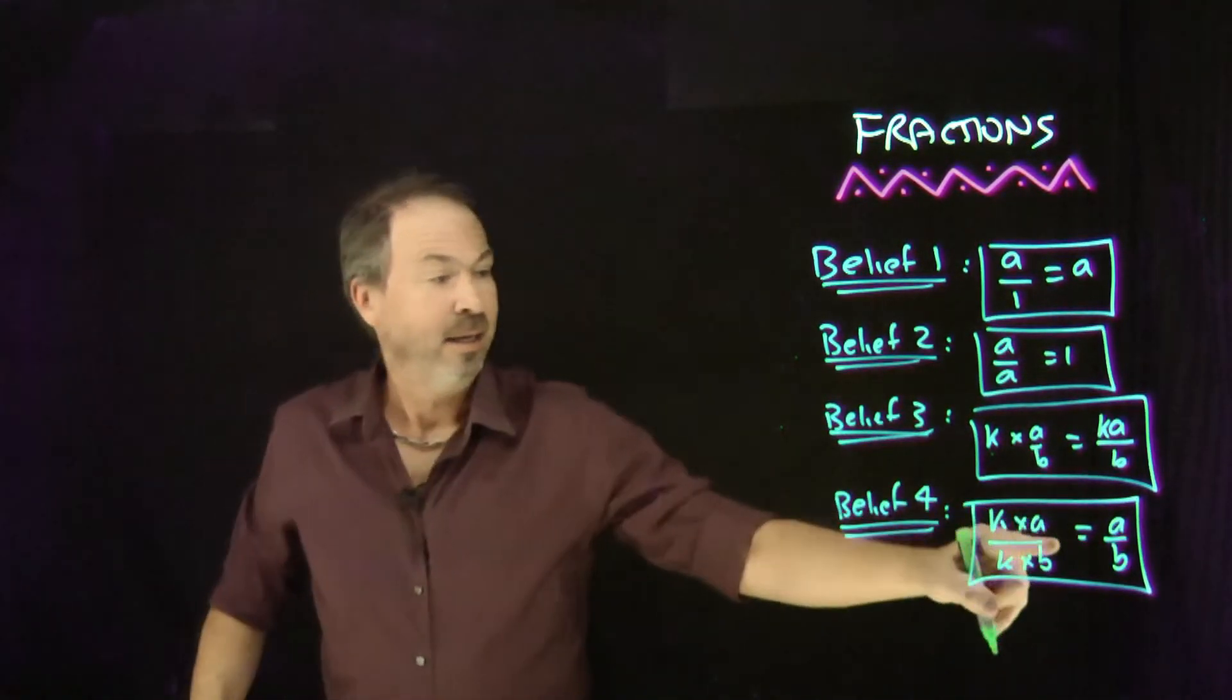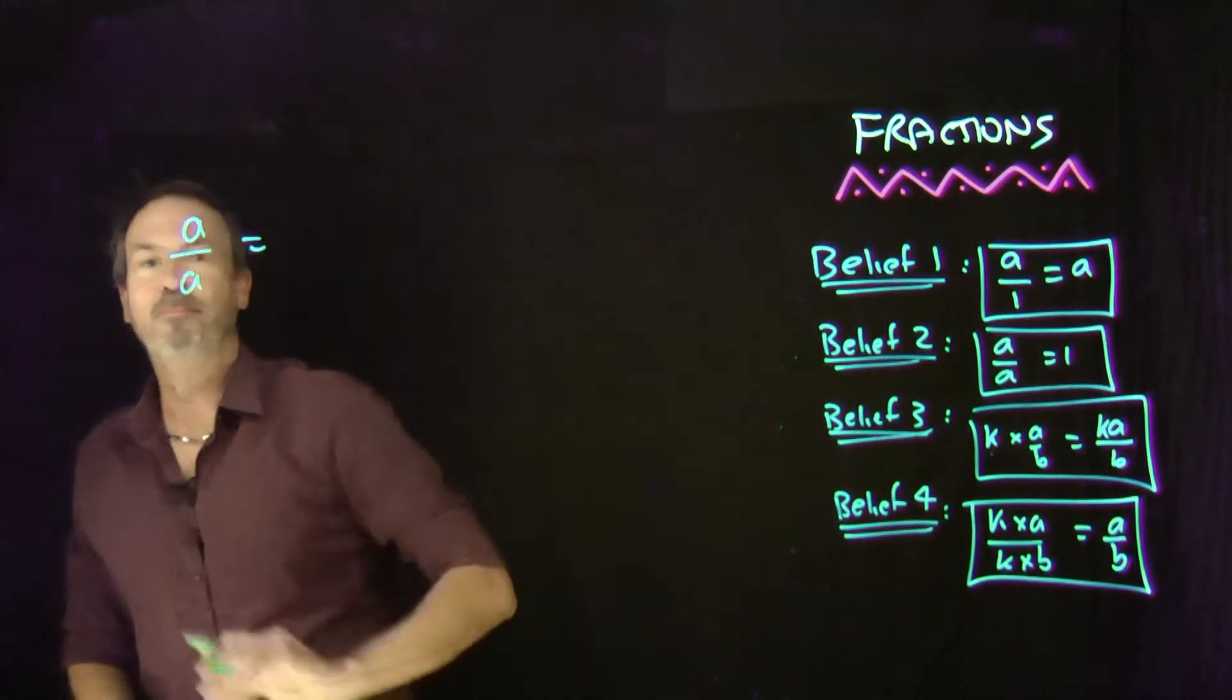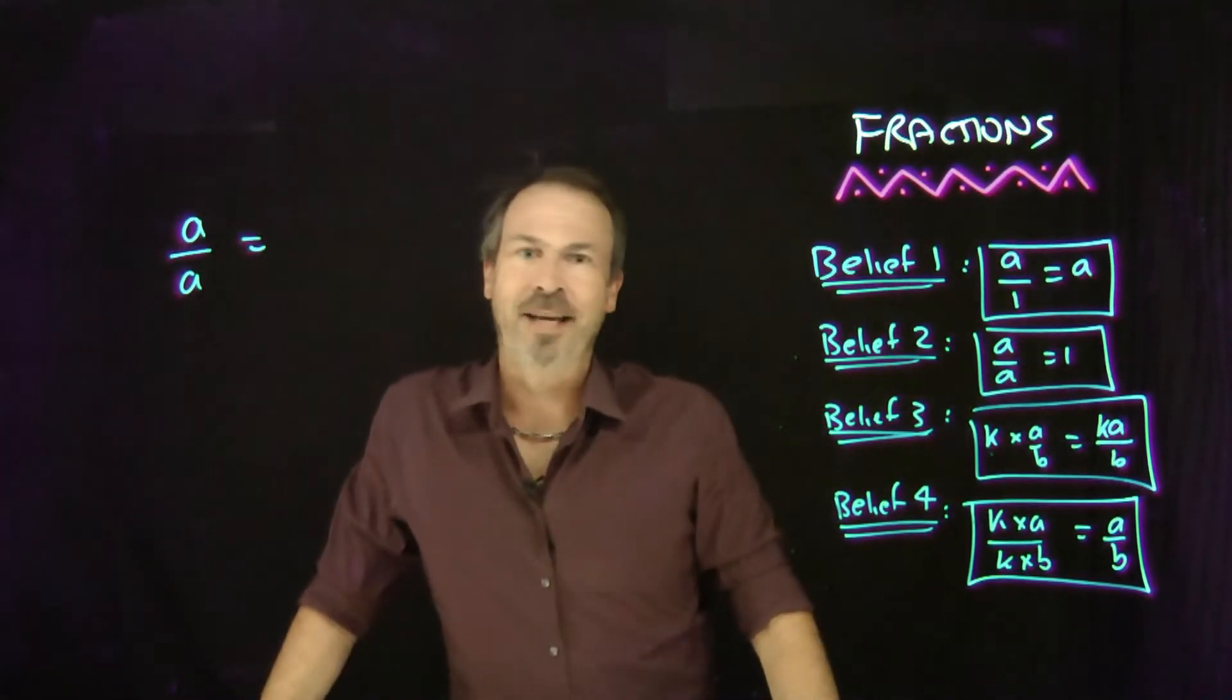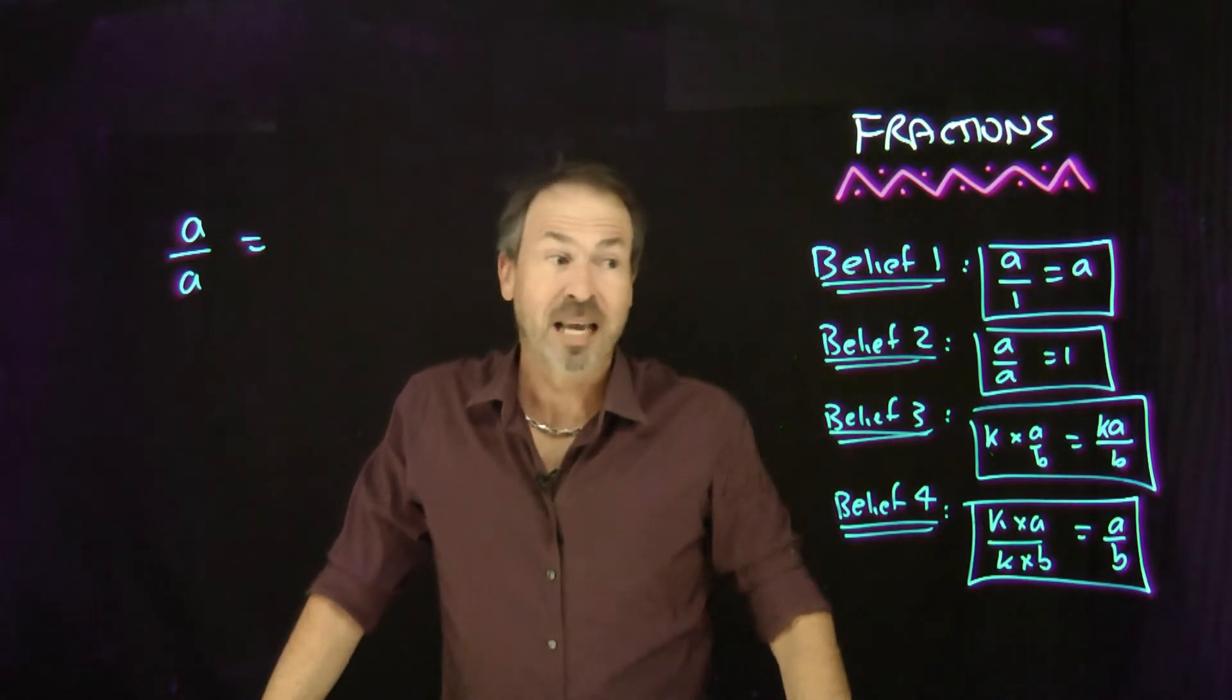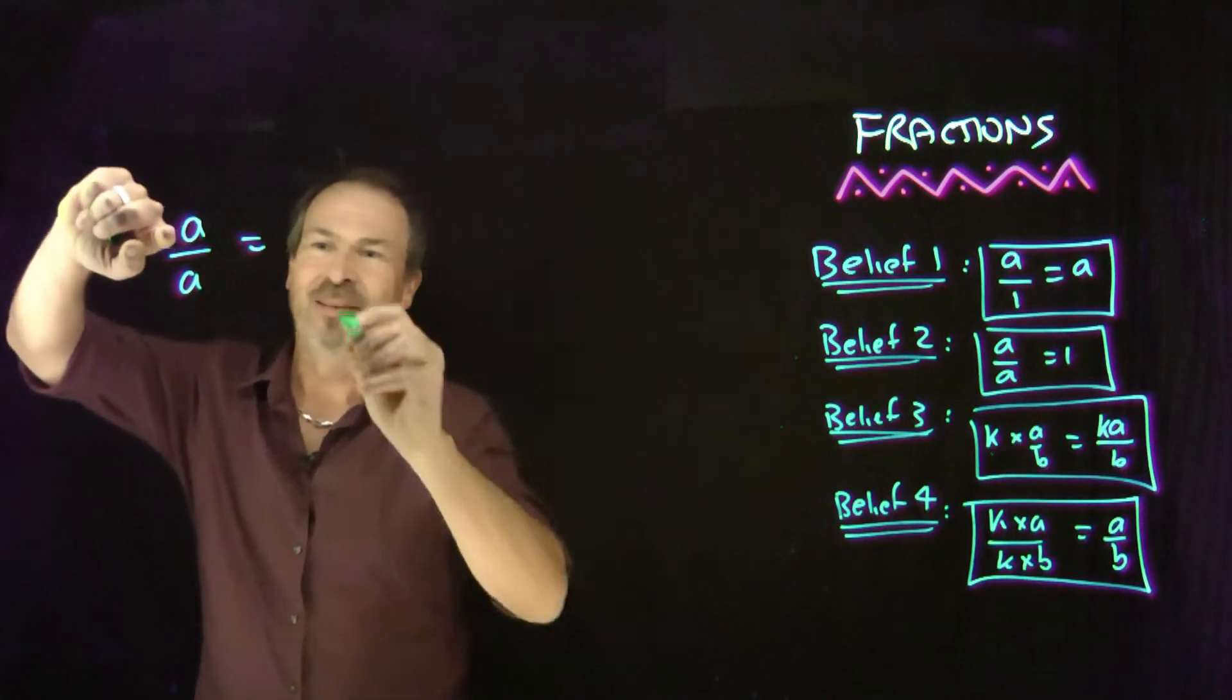I'll take belief number two. That's about a pies for a students. All right. Okay, I want to work through that and see if I can deduce that really does have to have the value one. All right, let's see.